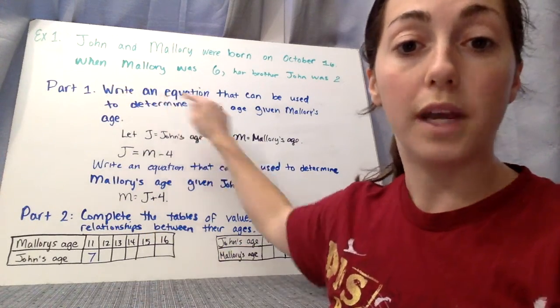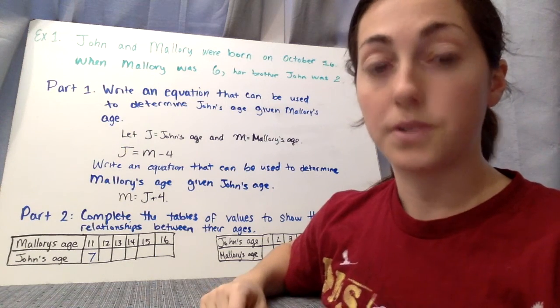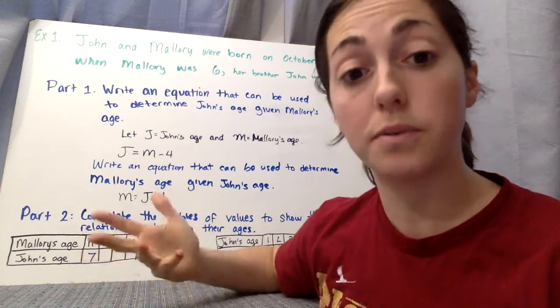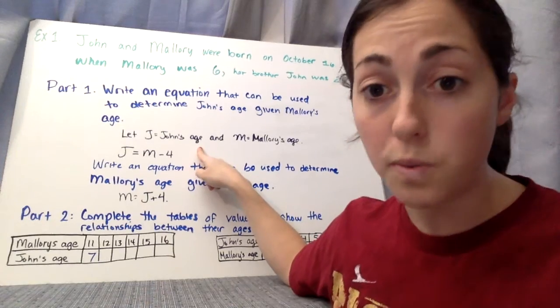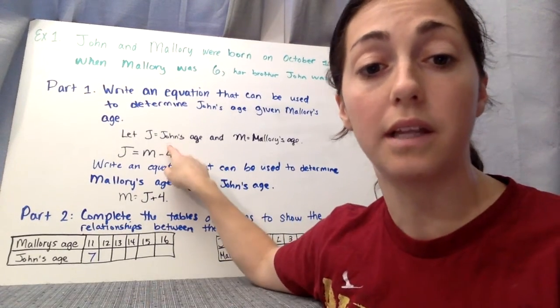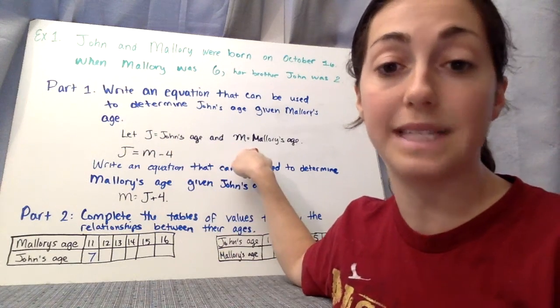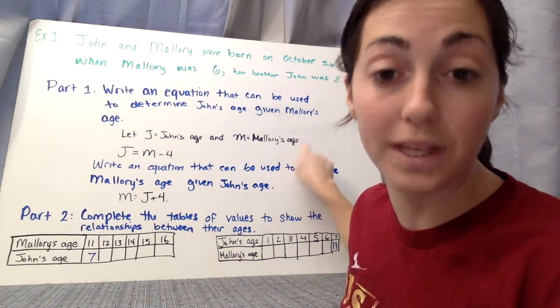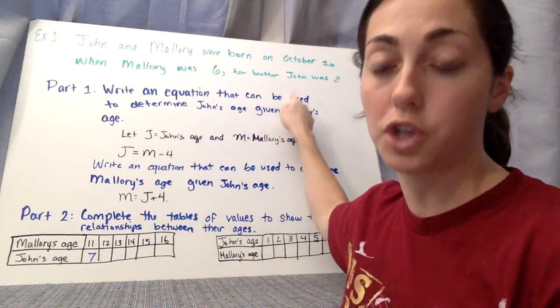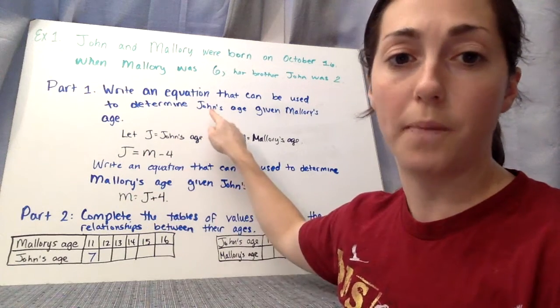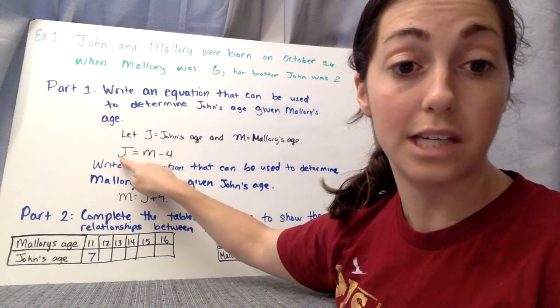Part 1. Write an equation that could be used to determine John's age given Mallory's age. So you have to think, an equation deals with variables. I'm going to let j equal John's age. We could use x or y as a variable, but because we're using the letter j, it'll help remind me that it's talking about John. And I'm going to use m for Mallory's age. So I want to think, what makes sense? When Mallory was 6, her brother John was 2. So we need j equals, because j is John's age.